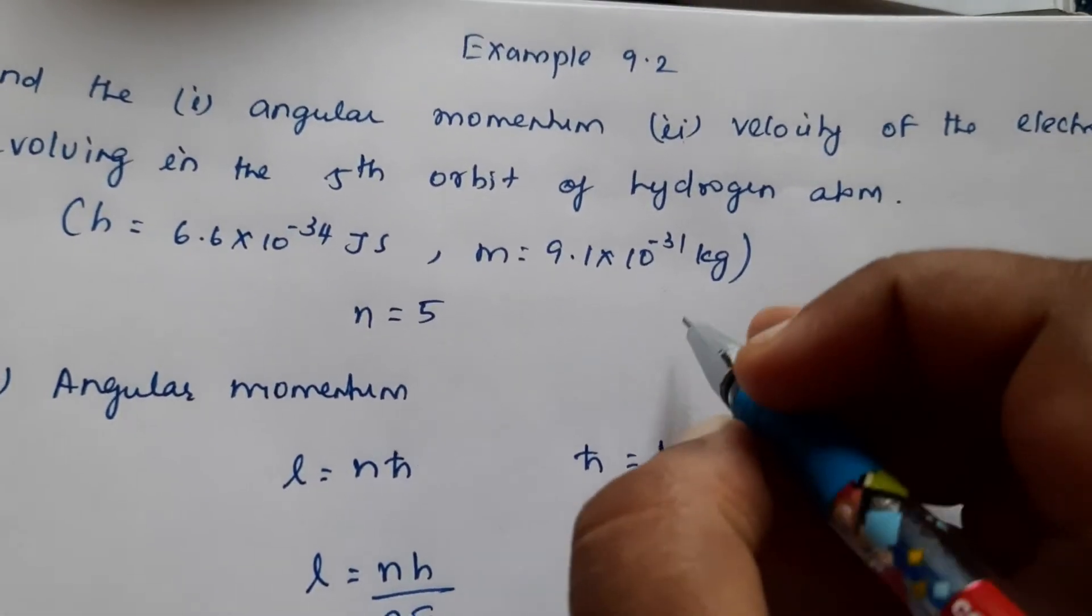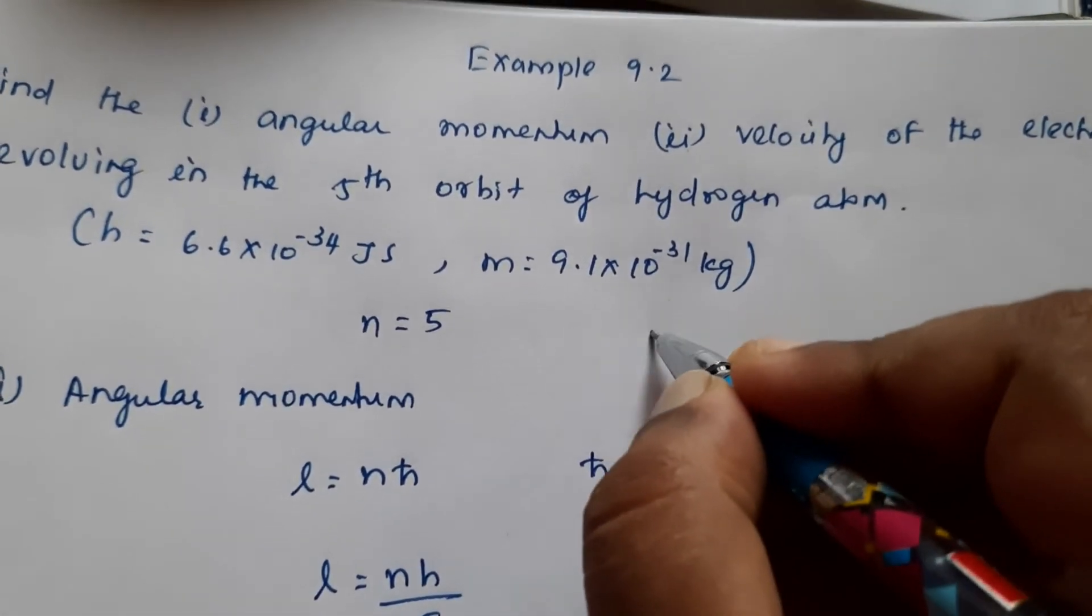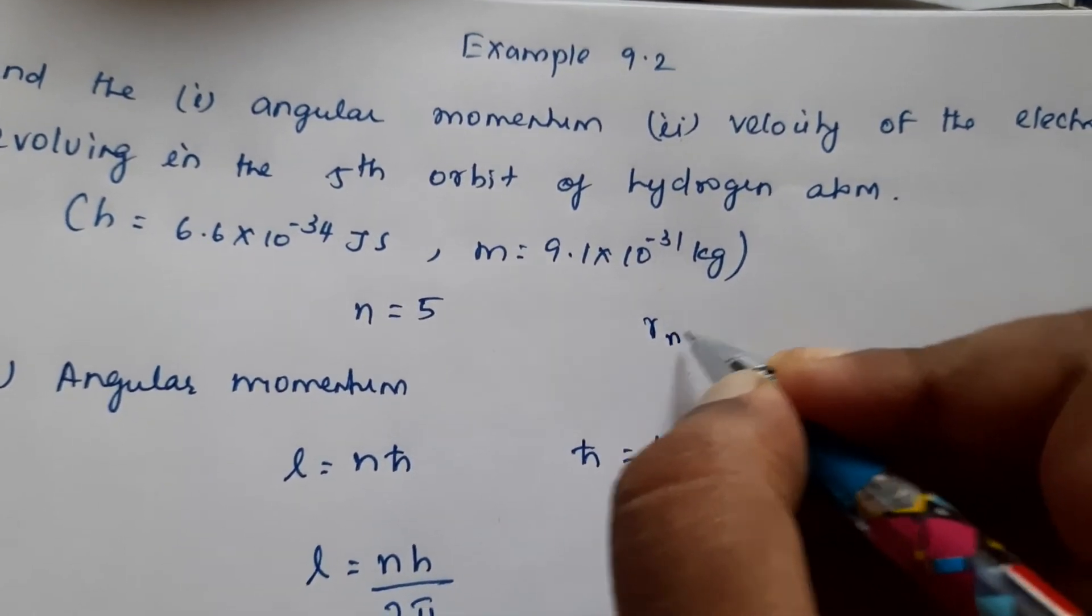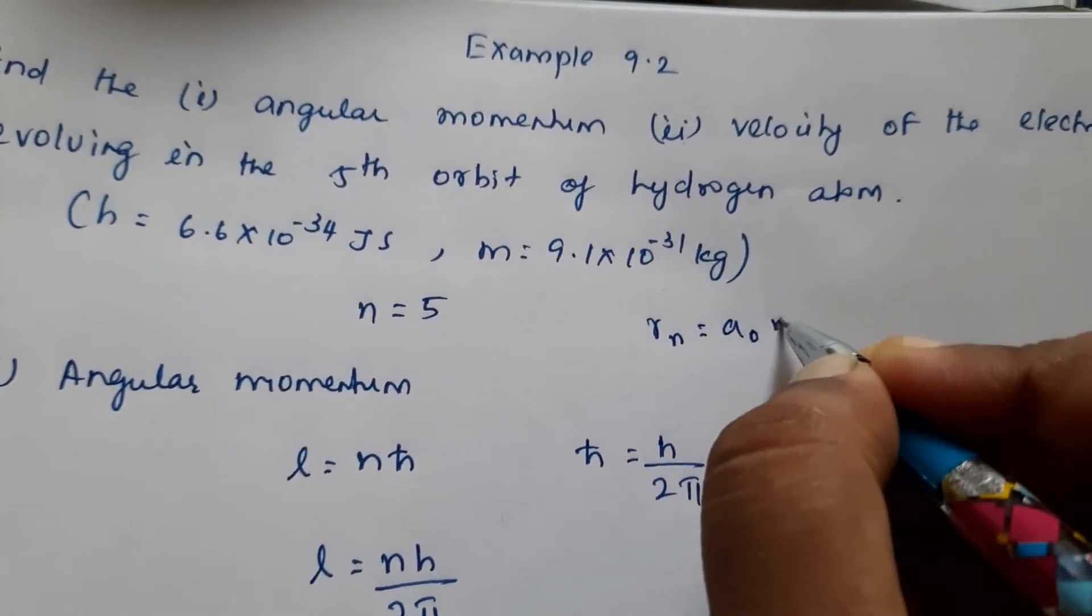The radius is not given in the problem. But we can calculate using this formula. Rn is equal to A0 into N square.